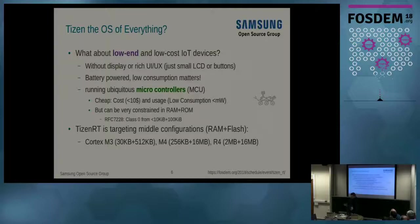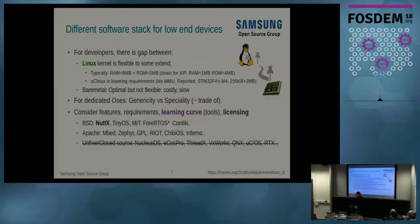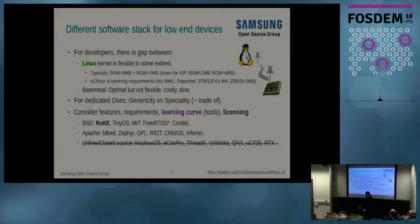Currently Tizen RT is focusing on three types of configurations. All three are using ARM CPUs — from the smaller one to the higher one. It would be difficult to bring the full Tizen stack to them. Tizen itself is built on the Linux kernel. Linux is flexible and available on many kinds of devices — I know people have managed to make it run on a light bulb — but it's not very efficient in terms of footprint or power consumption.